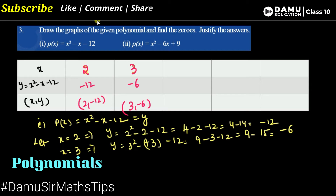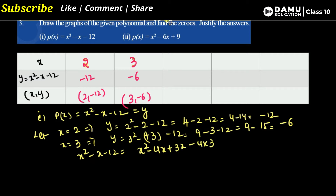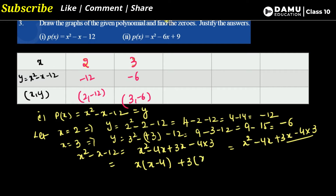We need to find where y equals 0. We can factorize x square minus x minus 12. Using the format where 4 times 3 equals 12, we write x square minus 4x plus 3x minus 4 into 3. Taking x common from the first two terms gives x(x minus 4), and 3 common from the last two terms gives 3(x minus 4).